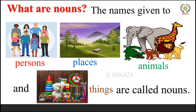Animals. As you can see from the picture, we have crocodile, elephant, zebra, giraffe, and lion, and then there's a monkey. So these are also names and they are called nouns. The last one is name of things.